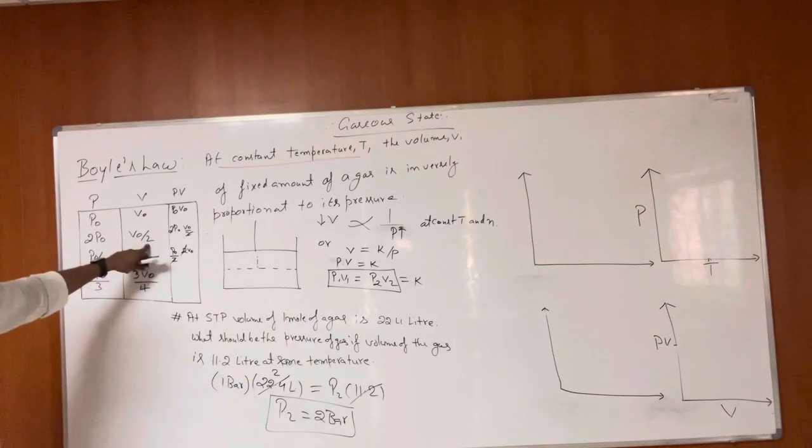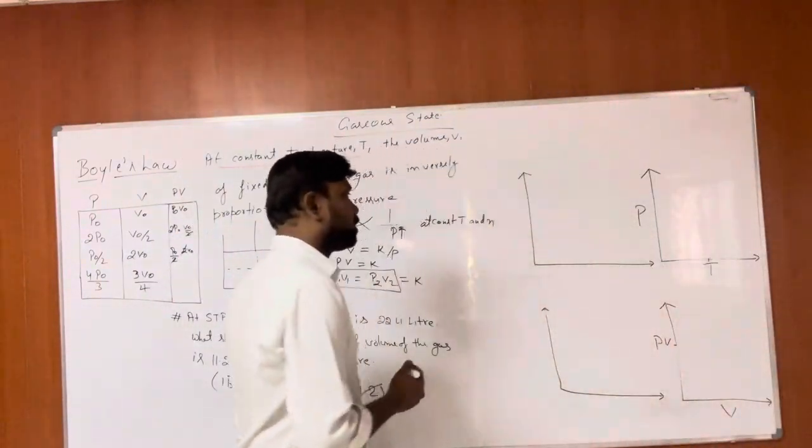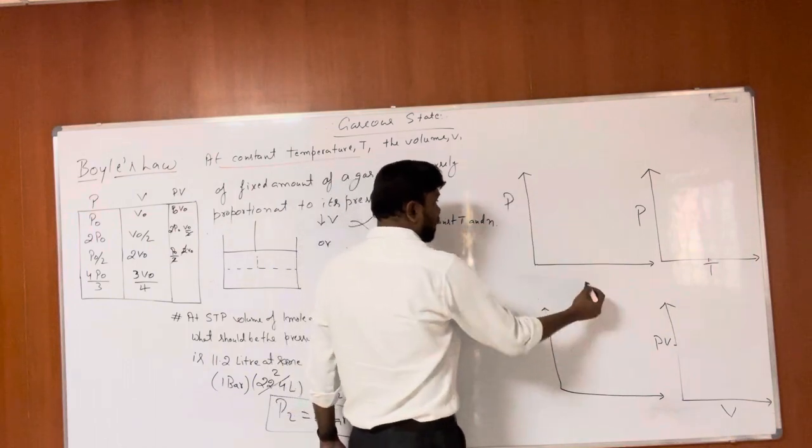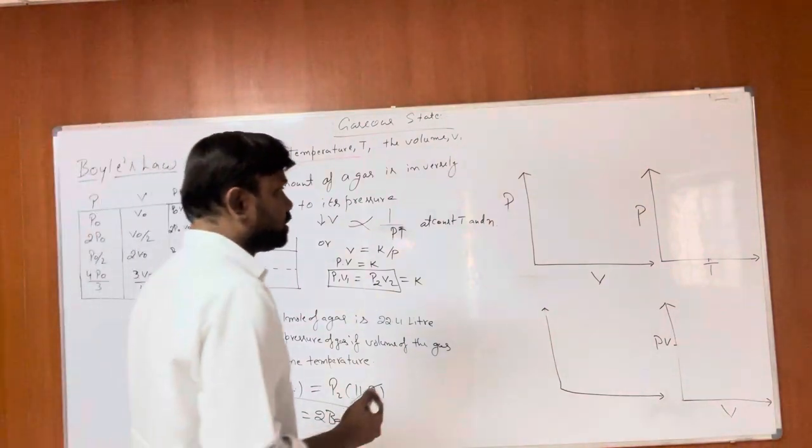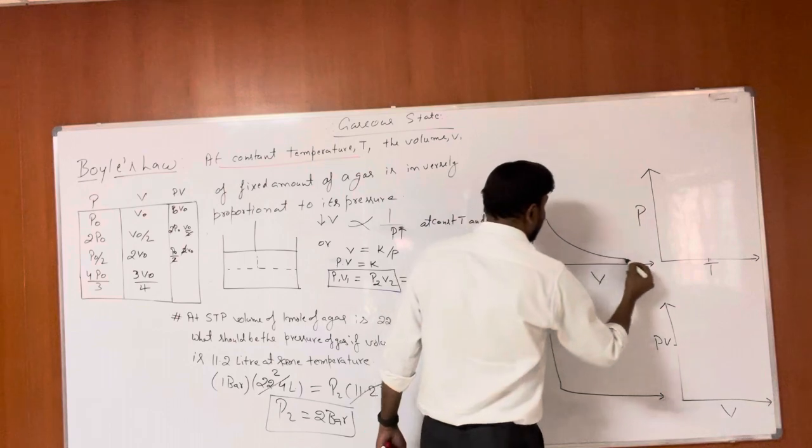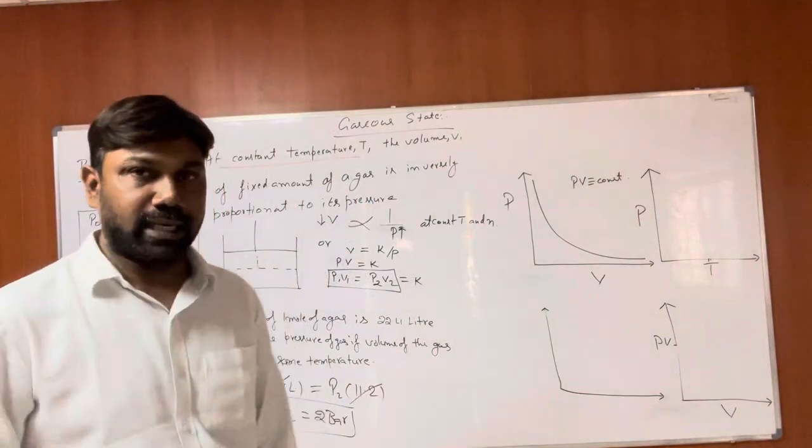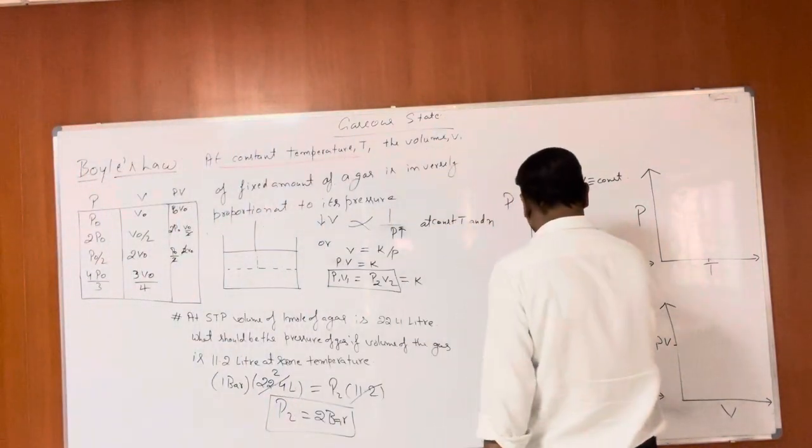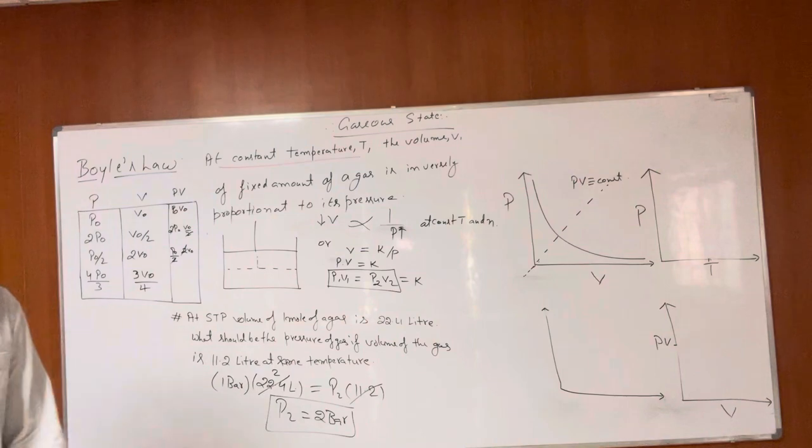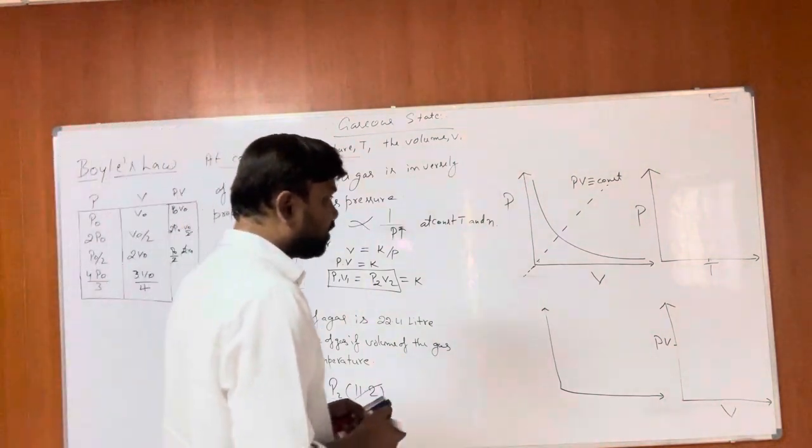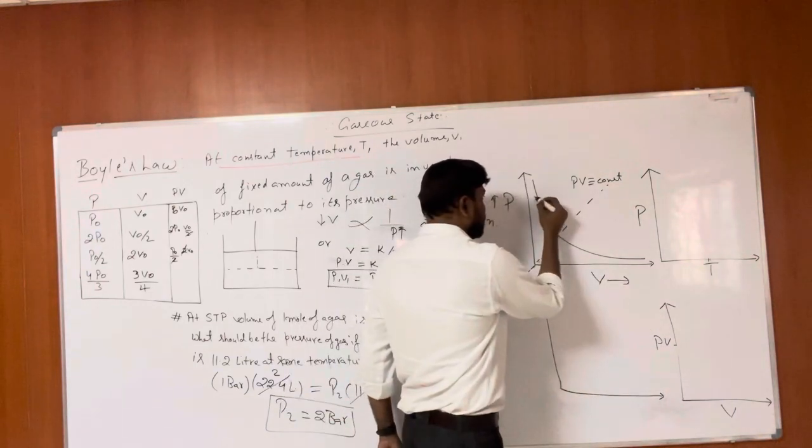We can directly obtain this from the table we drew earlier. Next part of Boyle's law is graphs of different variables. PV graph in Boyle's law will be rectangular hyperbola because product of P and V is constant. From this graph we can see if we increase the volume, pressure is actually going down.